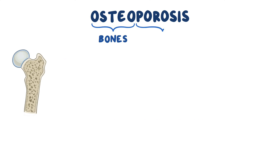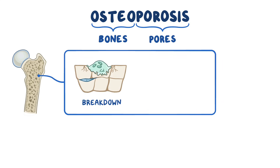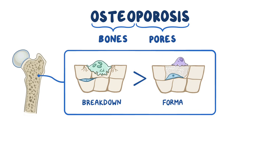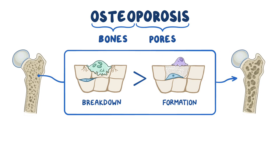Osteo refers to bones, and porosis means pores. So osteoporosis is when there's a higher breakdown of bone in comparison to the formation of new bone, which results in porous bones, meaning a decrease in bone density to the point of potential fracture.